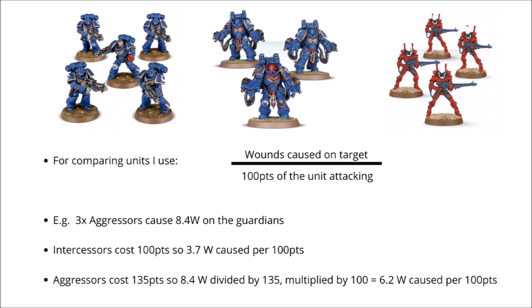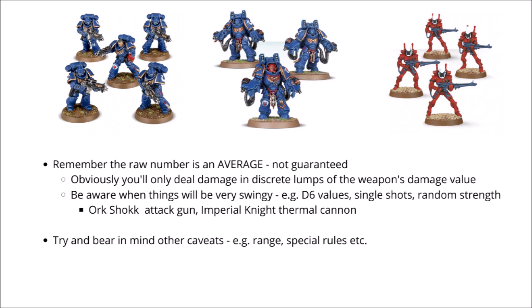Obviously the Aggressors will do even better if they manage to fire twice. When interpreting the numbers, remember the raw number is an average — very much a ballpark figure that's likely to be roughly representative. Bear in mind how the actual damage is going to fall: say if you're firing damage 2 weapons, the amount of damage is likely going to be a multiple of 2, so if your unit averages 5 damage they're most likely to either deal 4 or 6 wounds to that target. Also bear in mind when weapons are likely to be very swingy — they might have an average of a certain number of wounds, but realistically might either get far higher or absolutely nothing at all. The worst offenders tend to have multiple random characteristics within the weapon's profile, which are pretty much all or nothing.